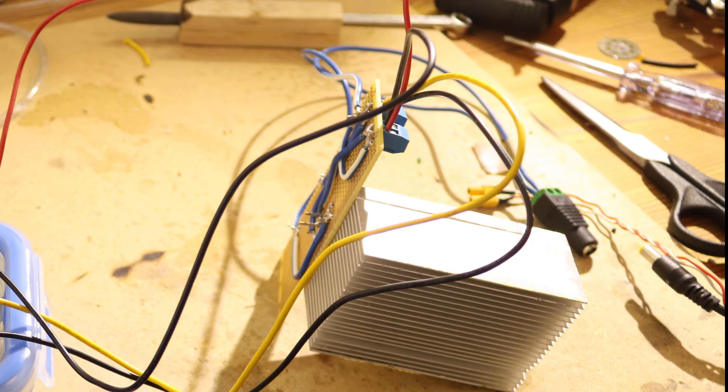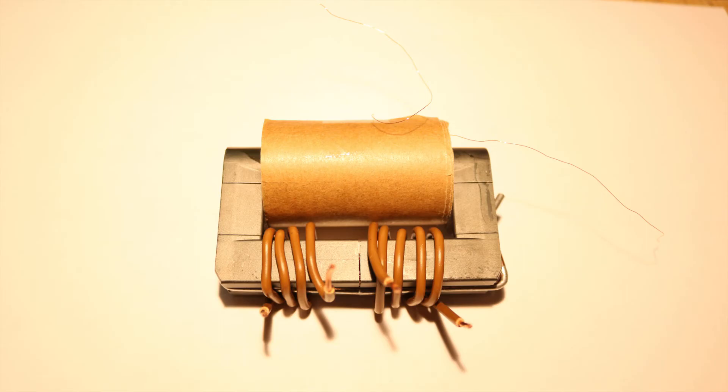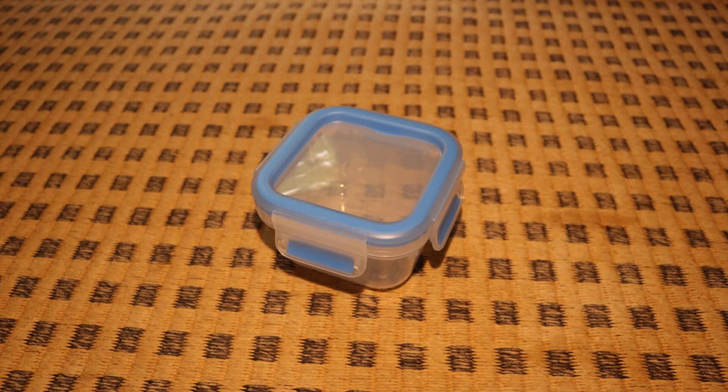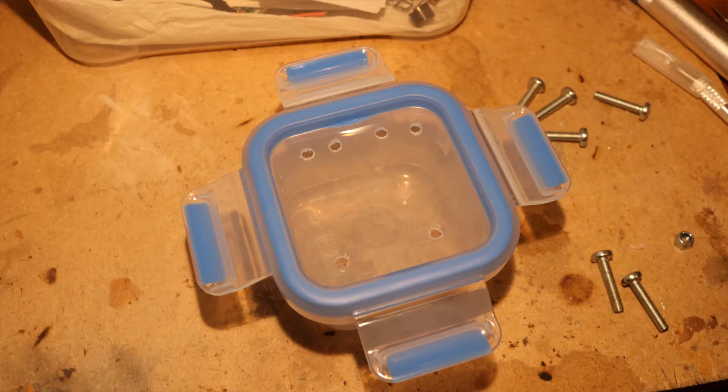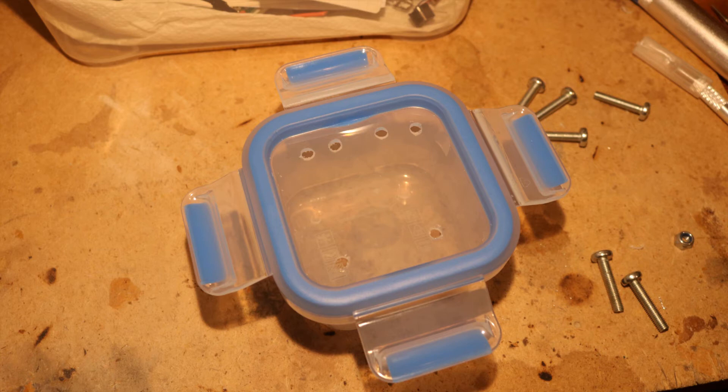But before firing up the transformer I had to put it into paraffin oil to prevent arc over. For that I got an airtight box and drilled four holes for the primary side and two holes for the secondary side into the lid.